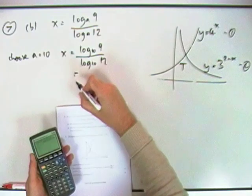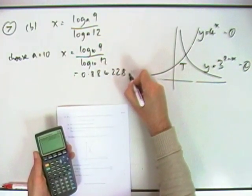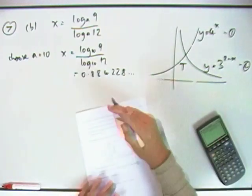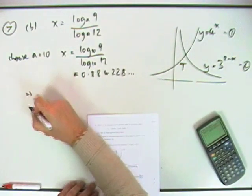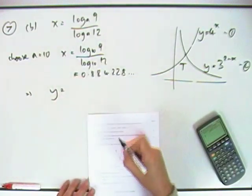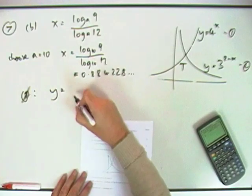And that gives me 0.884228, and so on. I'll just leave that just now, because it's not actually wanting me to write that down. Which means that y is going to be substituting that into anyone, so I'll just put a note, so using number 1.